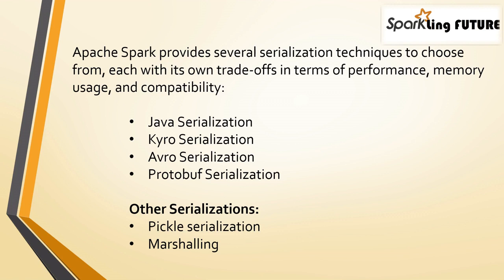Marshaling — also known as serialization or pickling in some contexts — is the process of converting complex data structures or objects into a format that can be easily stored, transmitted, or reconstructed. It involves transforming data into a linear representation, often in the form of bytes or a string, so that it can be saved to a file, sent over a network, or stored in a database.